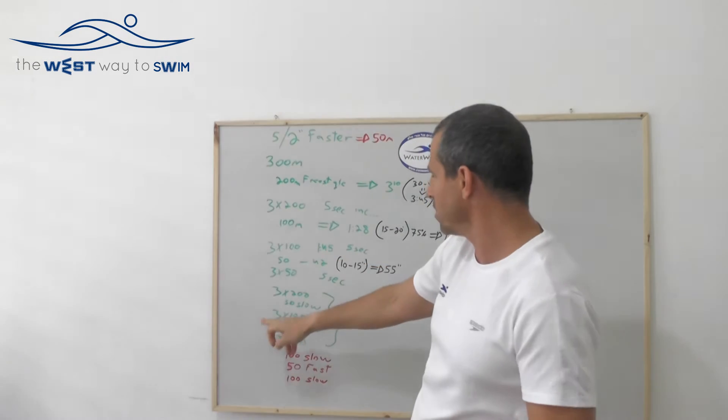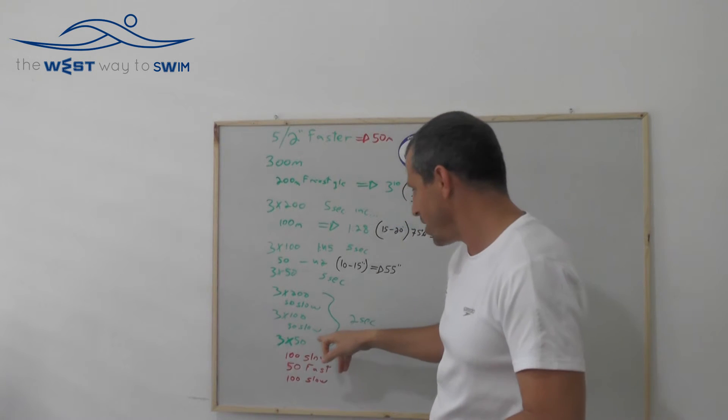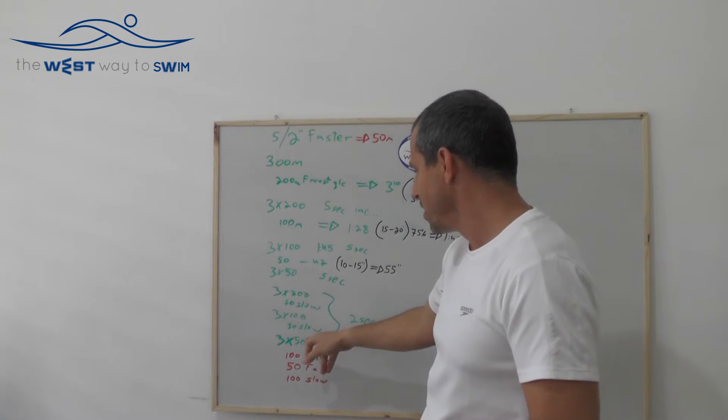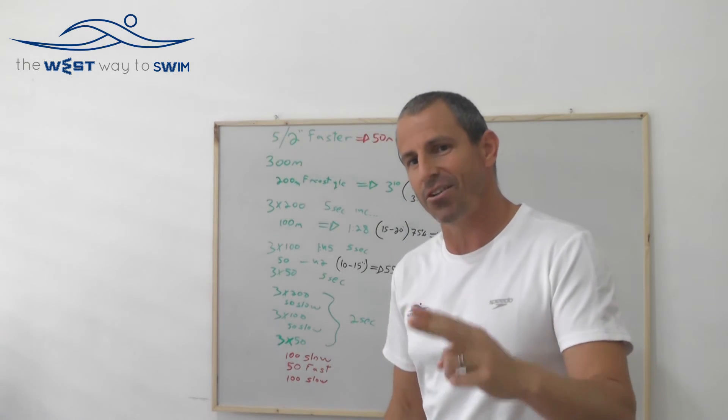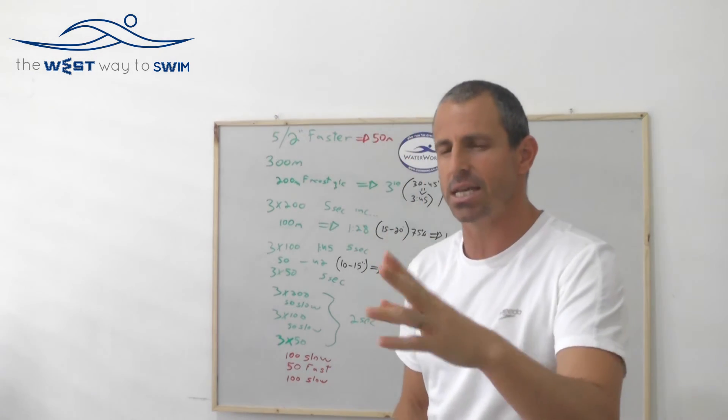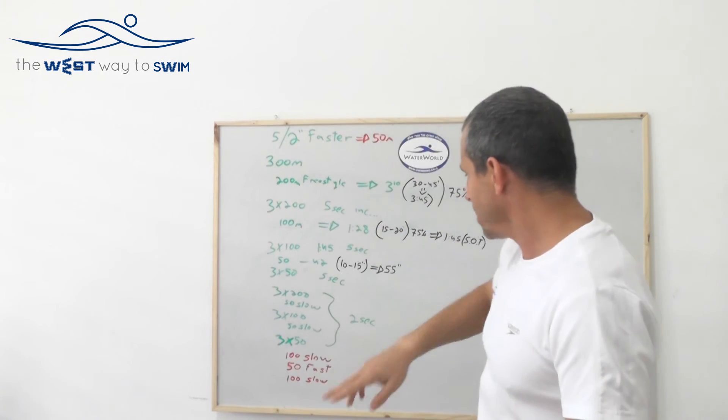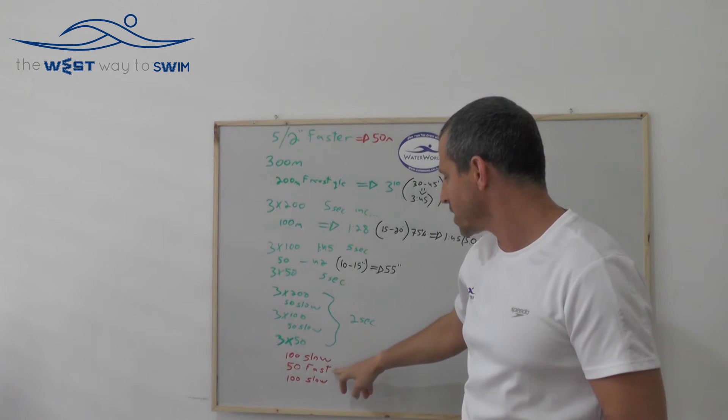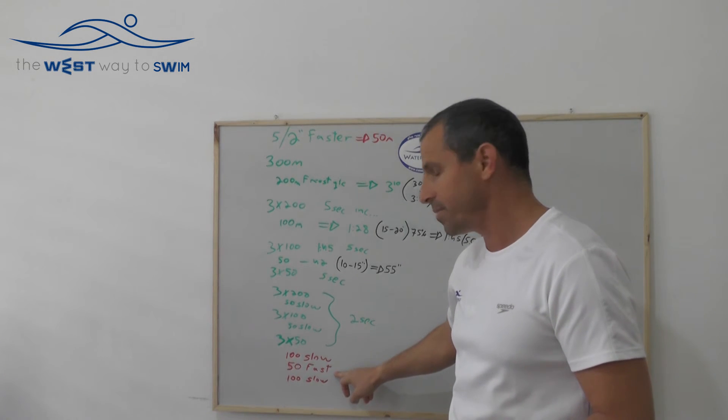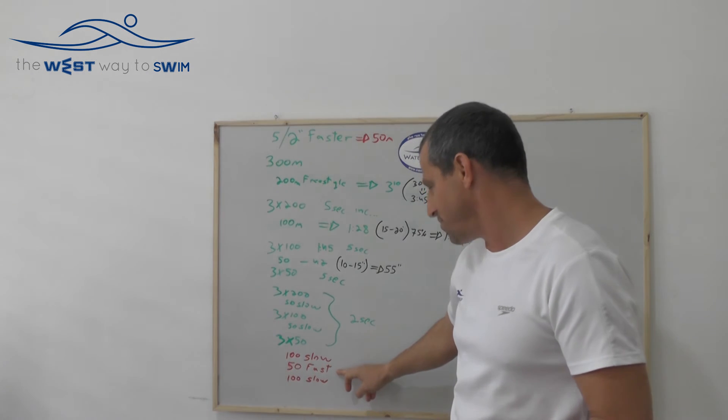50 slow and the same drill 3x100. Then afterwards 50 slow and 3x50 but you're going to try to control increasing pace of 2 seconds. It's a very hard drill. You're going to love it. At the end 100 slow and then you're going to swim as fast as you can and count your strokes in 50 meters freestyle.